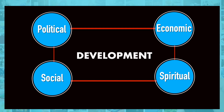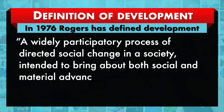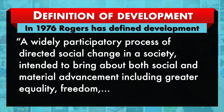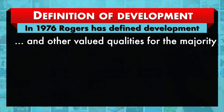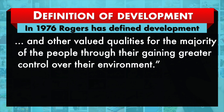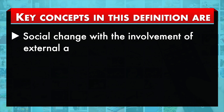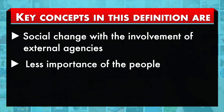In the last seven decades, scholars have proposed various theories and models. In 1976, Rogers defined development as a widely participatory process of directed social change in a society, intended to bring about both social and material advancement including greater equality, freedom and other valued qualities for the majority of the people through their gaining greater control over their environment. Specifically, this definition focuses on directed social change in which external agencies' involvement is needed, while giving much less importance to the people concerned, because external agencies formulate policies and are involved in their implementation.